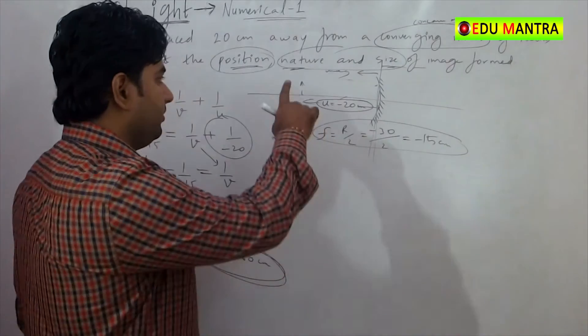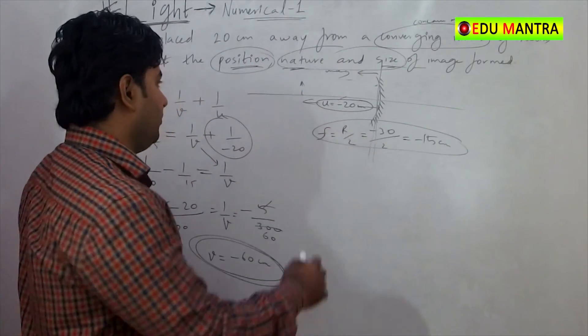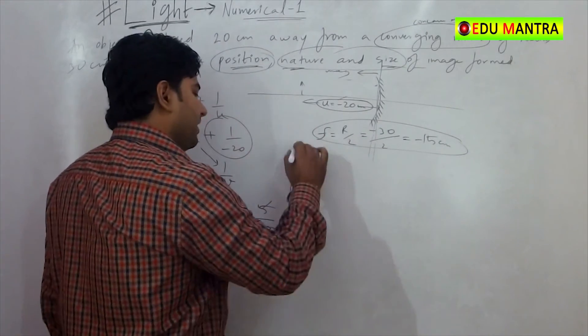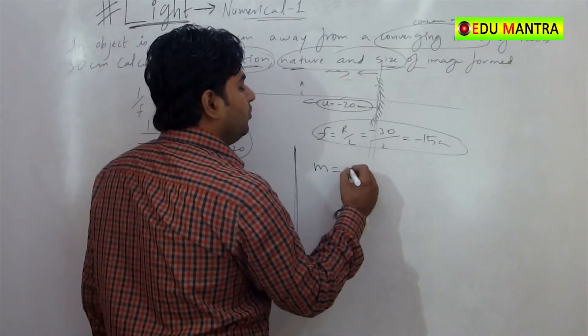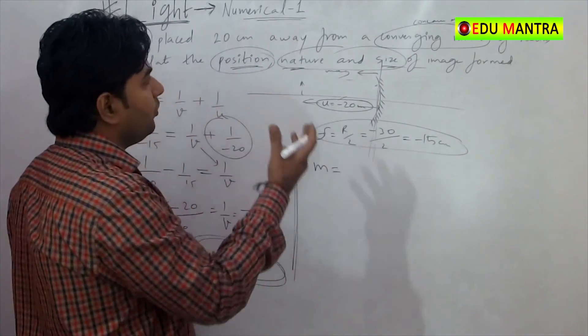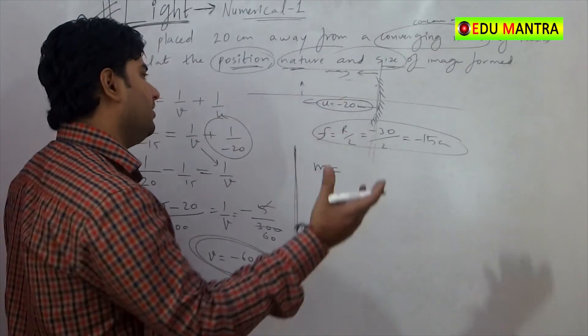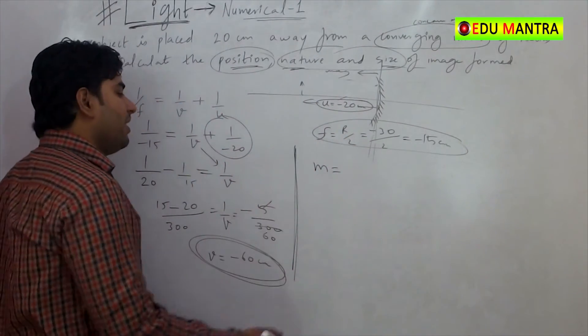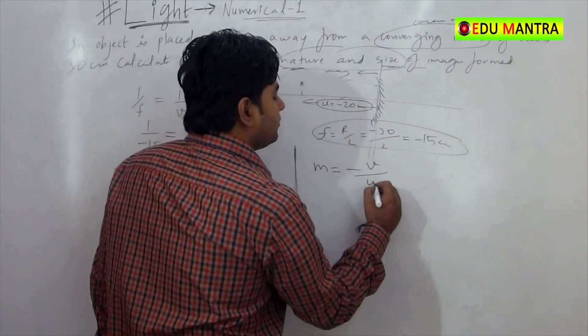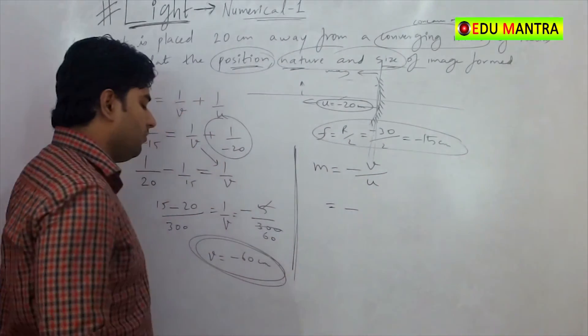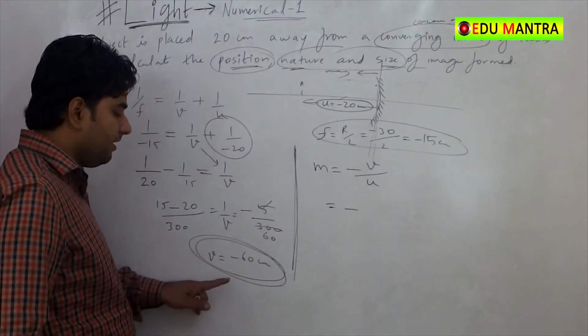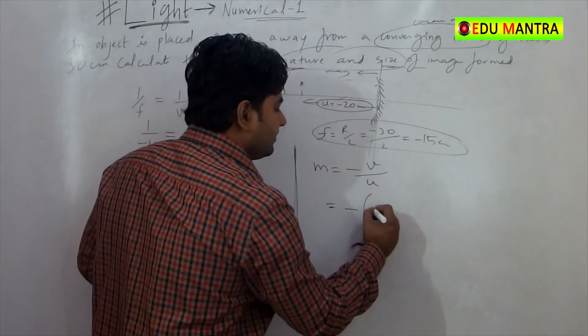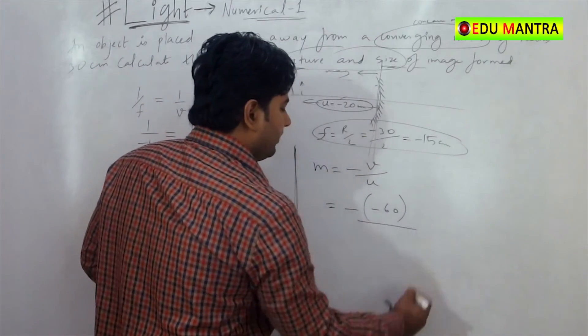Now we have to find nature and size. So for that, we will use the formula for magnification. Magnification is equal to h dash by h, which equals minus v by u. So, v is minus 60.